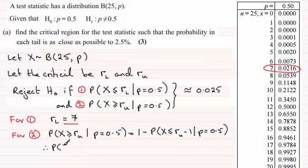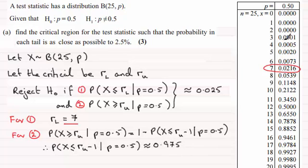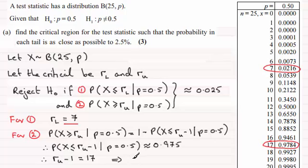So the probability of X being less than or equal to RU minus 1, given P equals 0.5, must be as close as we can get to 0.975. Looking in the tables, that value is at 17, showing 0.9784. Therefore RU minus 1 equals 17, and adding one to both sides gives the upper critical value RU equals 18. So our critical regions are at 7 and 18.